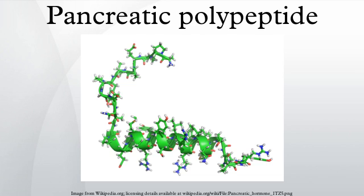Pancreatic polypeptide is a polypeptide secreted by PP cells in the endocrine pancreas, predominantly in the head of the pancreas. It consists of 36 amino acids and has a molecular weight of about 4200 daltons.